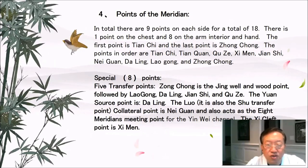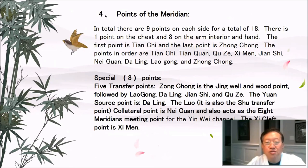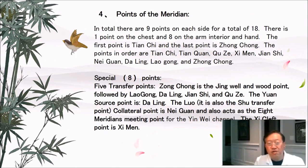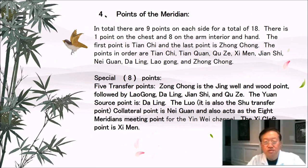Points of the meridian: in total there are nine points on each side for a total of 18 — one point on the chest and eight on the interior of the hand. The first point is tianchi and the last point is zhong chong. The points in order are: tianchi, tianchuan, chuze, ximan, jian shi, neiguang, da ling, laogong, and zhong chong. There are eight special points. The five transfer points include zhong chong, which is the jing well point, followed by laogong, da ling, jian shi, and chuze. The yuan source point is da ling, also the shu transfer point. The collateral point is neiguang, which also acts as the eight meridians' meeting point for the yin wei channel. The xi cleft point is ximan.